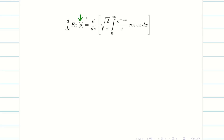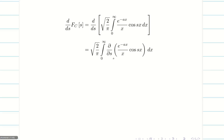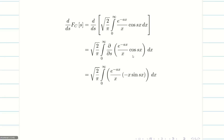On the left hand side we have only s, but on the right hand side we have two variables, x and s. So when we take d/ds, we treat it as partial differentiation. When I differentiate partially with respect to s, e^(-ax) and 1/x are both constants with respect to s. Differentiation of cos(sx) gives minus x·sin(sx). Now this x and the x in the denominator cancel, and the problem becomes simply the integral from 0 to infinity of e^(-ax) sin(sx) dx.